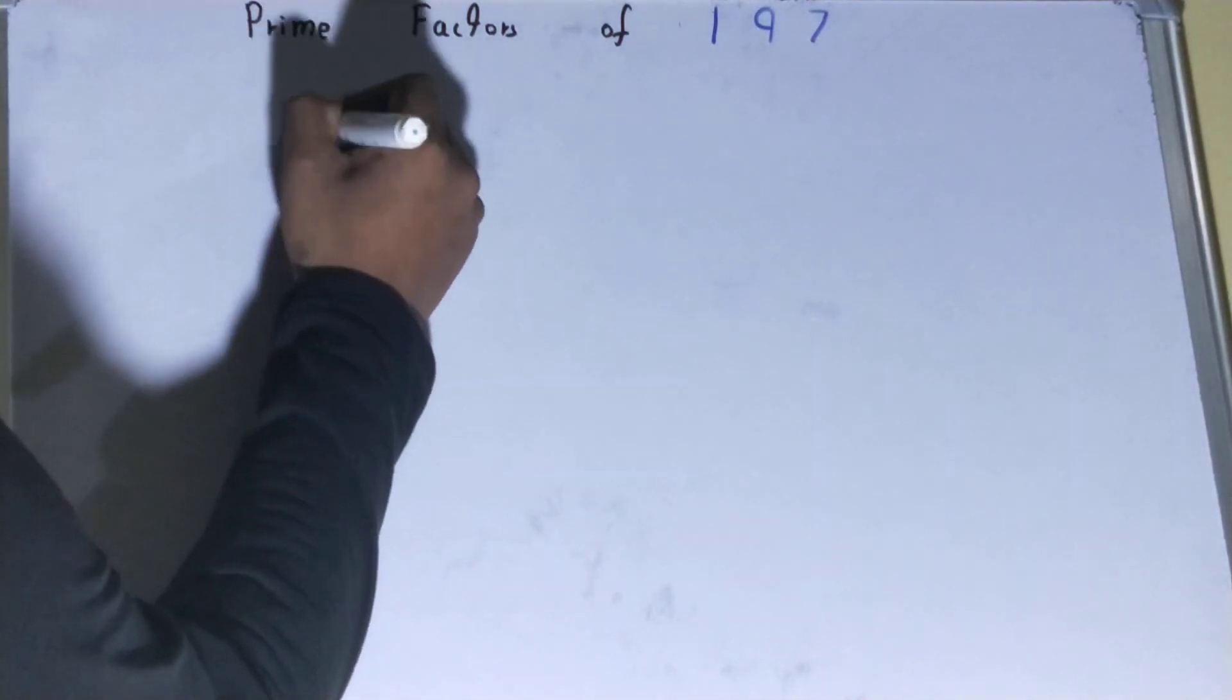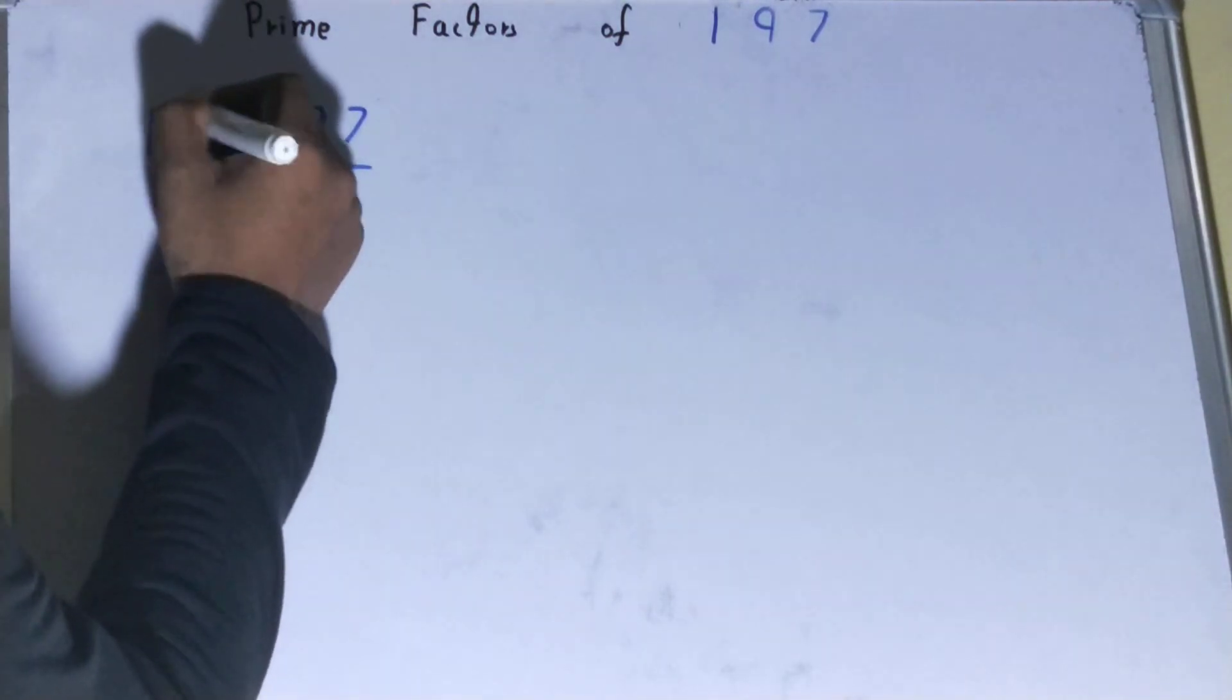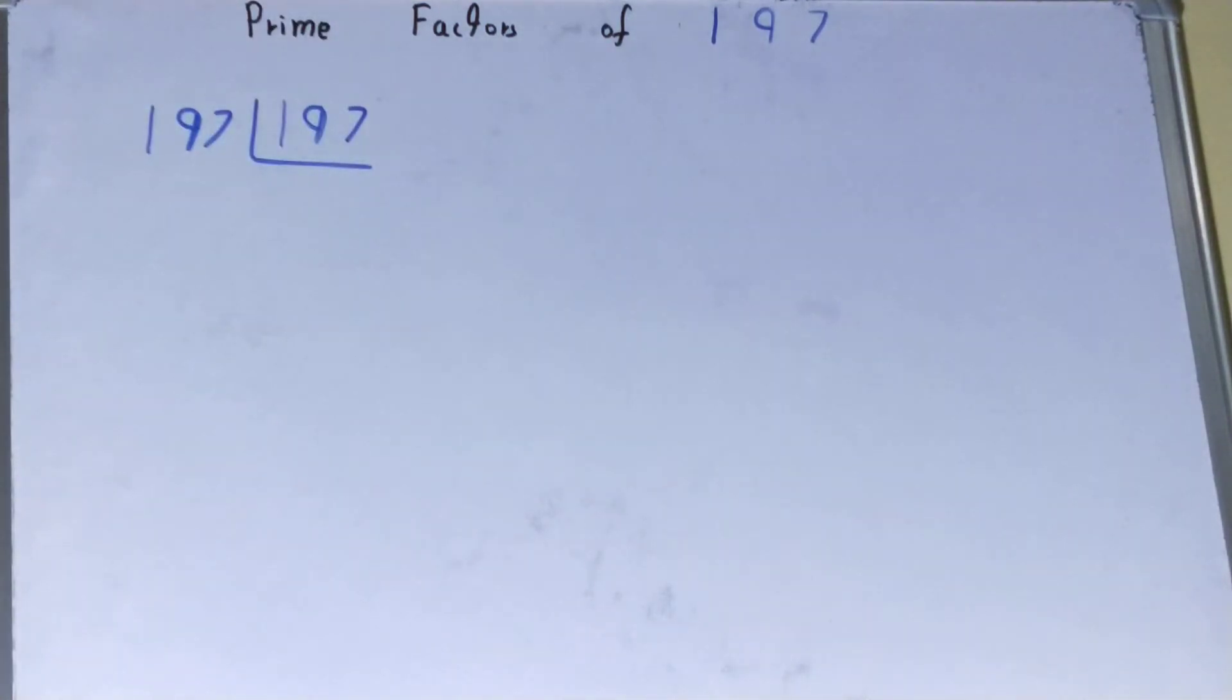...then you can write it like this, all right? And because 197 is a prime number, it is only divisible by itself, right? So you can write it on the left hand side also, and once you do so you'll have one.